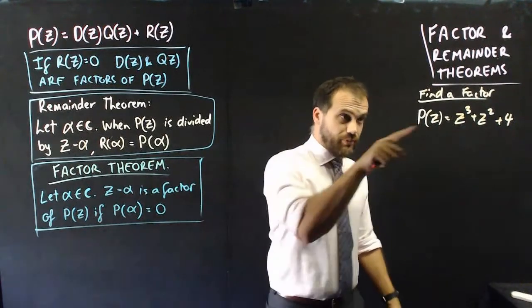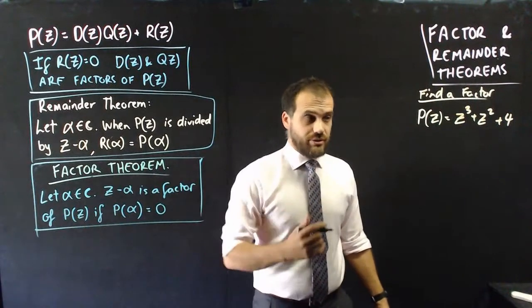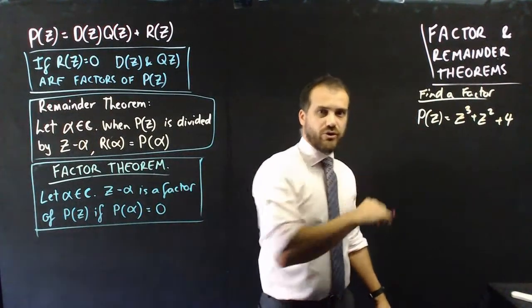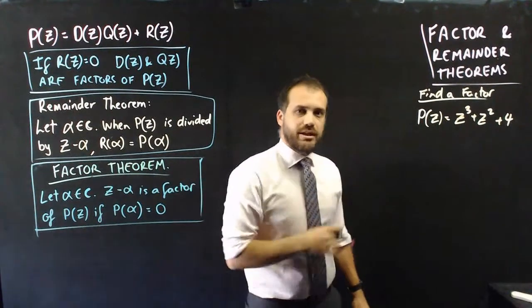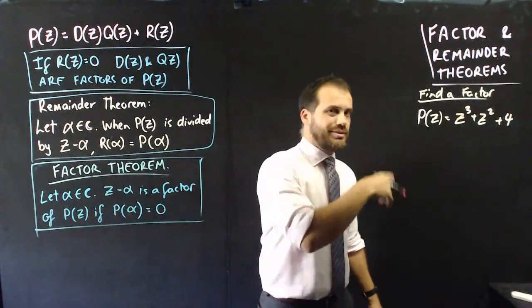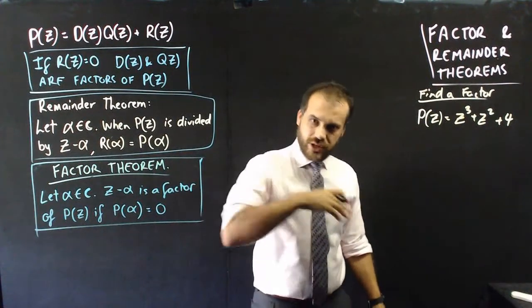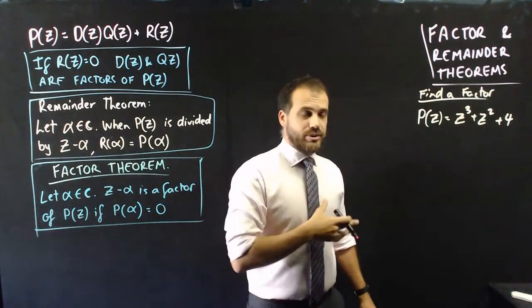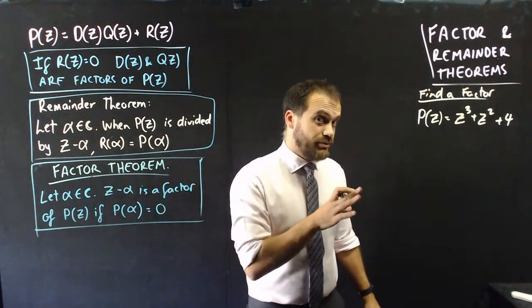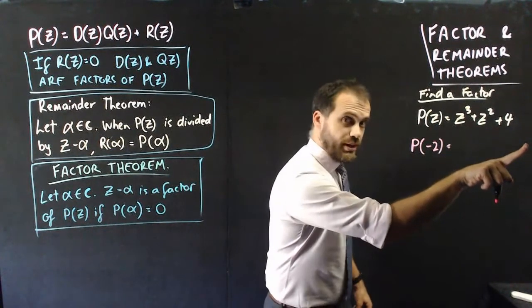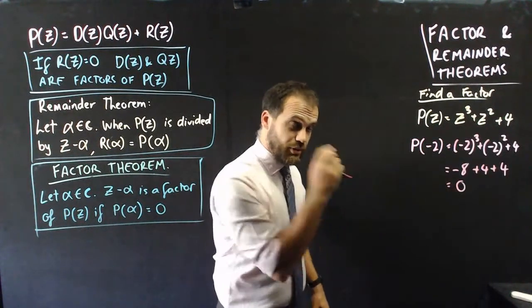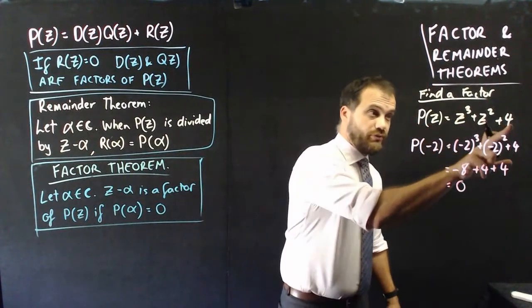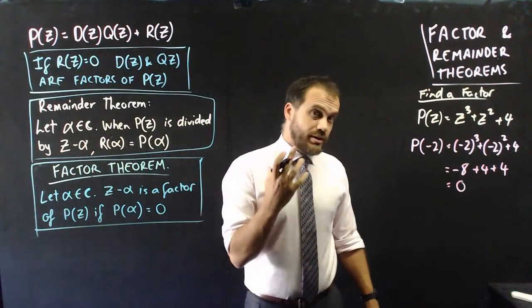So you can sub one into that and say one cube plus one squared plus four is six. No, one's not a factor. You can sub negative one in there and try that. No, that's not going to work. You can sub two in, negative two, three, negative three until it spits out the number zero, which is what you want. Now, I happen to know that if I sub in a special value, that being negative two, if I put negative two in there, I'll get an answer of zero. And so what can I say? I can say that a factor of this is definitely Z plus two.